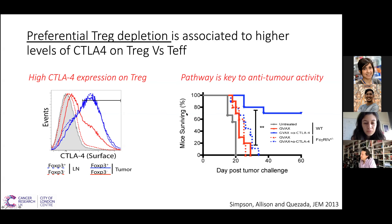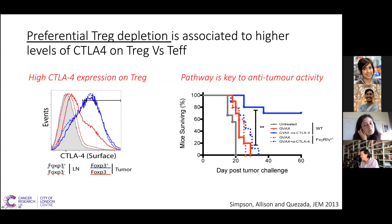The killing of T-regs is essential for the anti-tumor activity of the antibody. In wild-type animals where the antibody depletes T-regs, you get 70% complete responses. But if you do the experiment in FC-gamma receptor 4 knockout mice, where the antibody cannot deplete T-regs anymore, you cannot alter that balance, and you get no tumor protection. So the depletion of the T-regs is really critical to the final tumor protection observed.